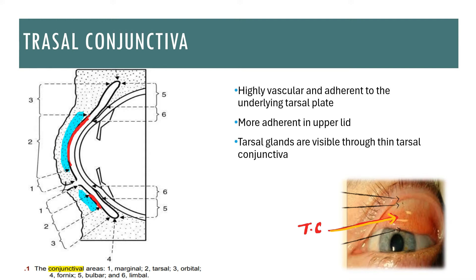The tarsal conjunctiva covers the tarsus in both the superior and inferior lids. It is highly vascular and strongly adhered to the underlying tarsal plate, more so in the upper eyelid compared to the lower eyelid. The tarsus contains tarsal glands also known as meibomian glands. Because the conjunctiva is very thin, the yellowish vertical structures of the meibomian glands traversing the tarsus are visible through the thin tarsal conjunctiva.